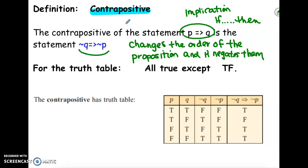So here's what it would look like in symbolic form. The rule for our truth table for a contrapositive is all are going to be true except for when you have a true-false.